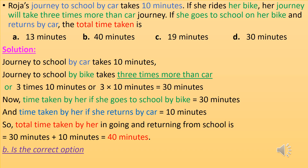Journey to school by bike takes 3 times more than by car, so 3 times 10 minutes equals 30 minutes. Time taken going to school by bike is 30 minutes and time taken returning by car is 10 minutes. So total time taken going and returning from school is 30 plus 10 equals 40 minutes. So B is the correct option.